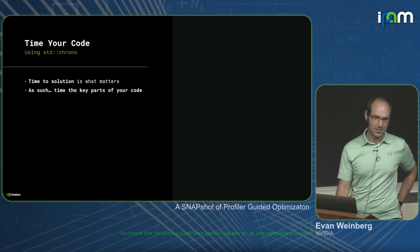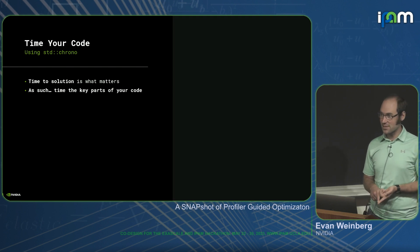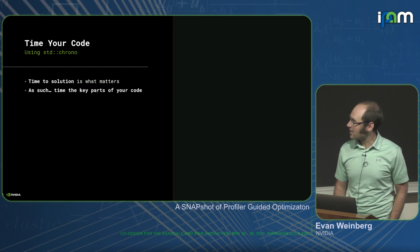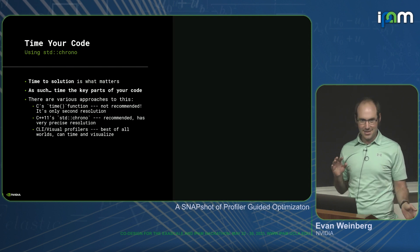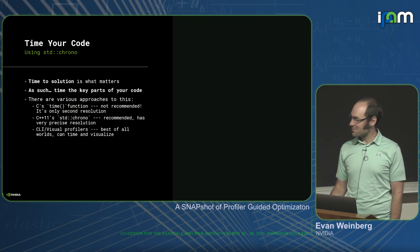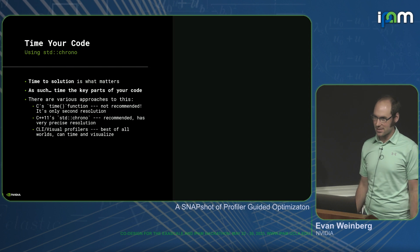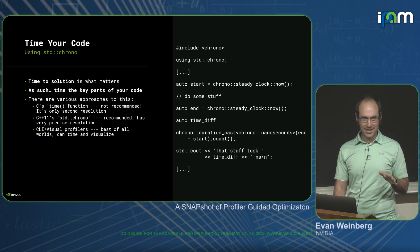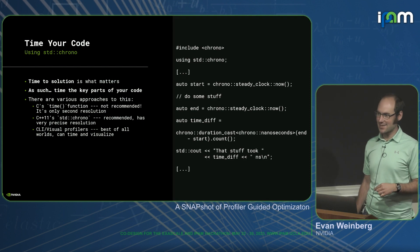Time to solution matters. I know we're in the race to exascale, but at the end of the day, time to solution for science is really what matters. So time the key parts of your code. Don't look at flop numbers. There are various approaches: C's time function is bad, don't use it. C++11 std::chrono is a lot better. Or take advantage of visual profilers. It's impossible to find how to use std::chrono, so copy it from these slides afterwards.